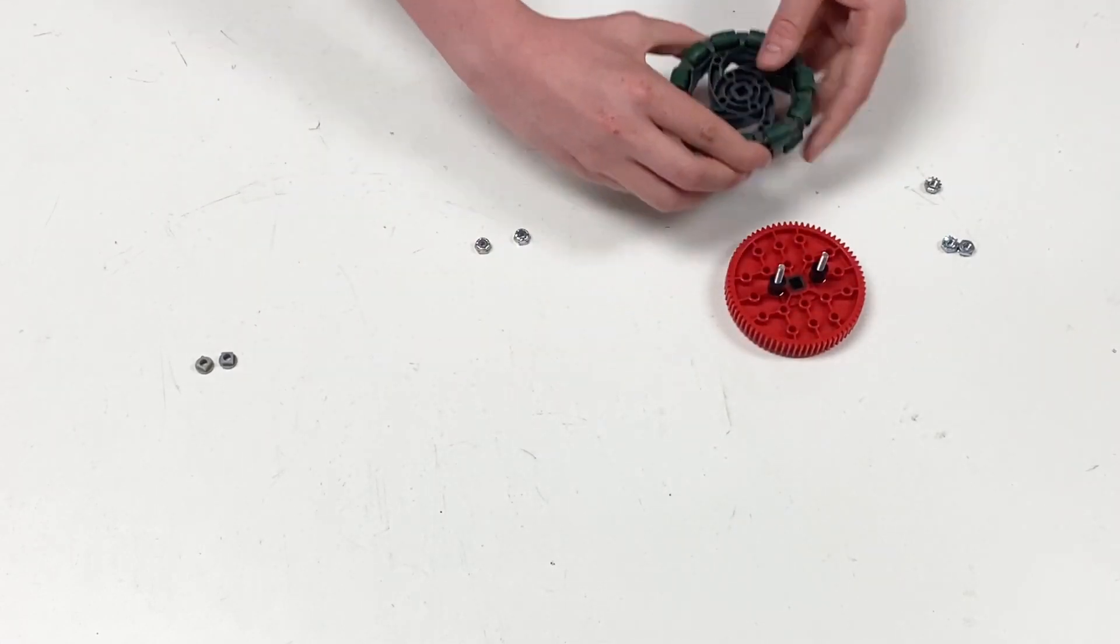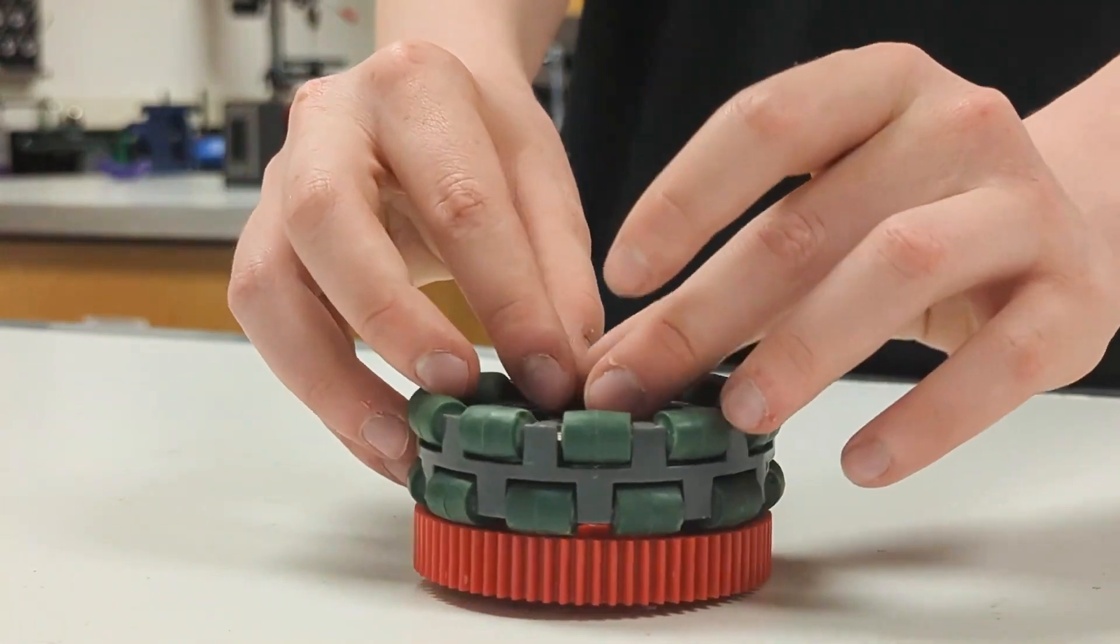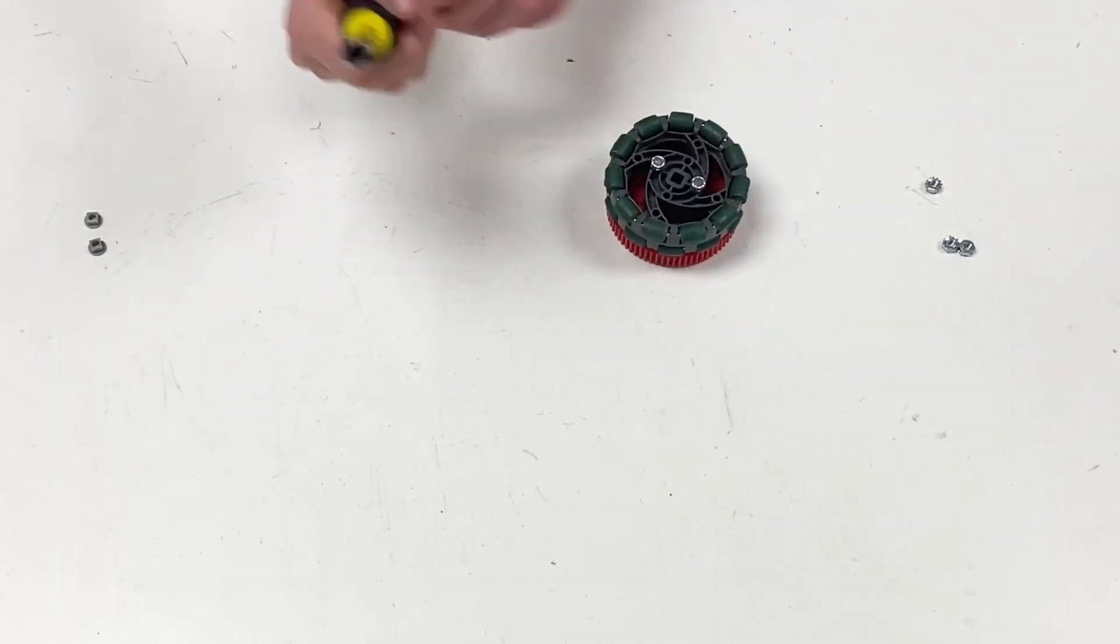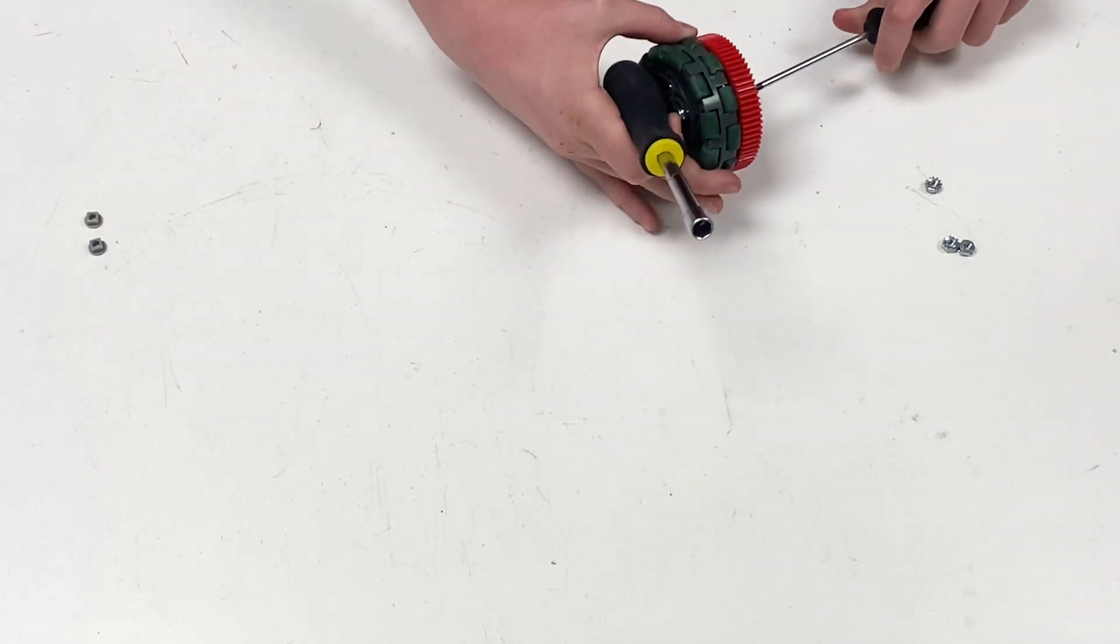And we're going to place the wheel on the gear. The inserts have not been placed on yet. Place the lock nuts onto this and take our nut driver and our screwdriver, and we have to make sure to keep it loose.